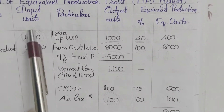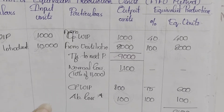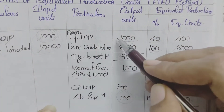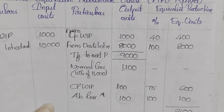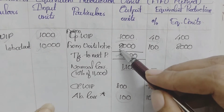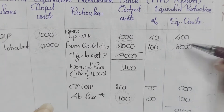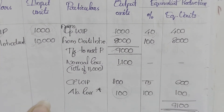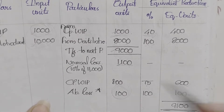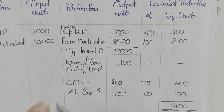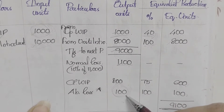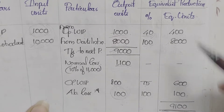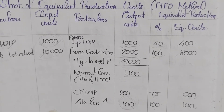So this is the first step recap: opening WIP 1,000 units introduced 10,000. Total transfer is 9,000 units — split as 1,000 units opening WIP (60% previously done, so 40% remaining) and balance 8,000 units assumed 100% complete. Normal loss output units are not equivalent units. Closing WIP 800 units at 75% = 600. Abnormal loss 100 units at 100% complete.